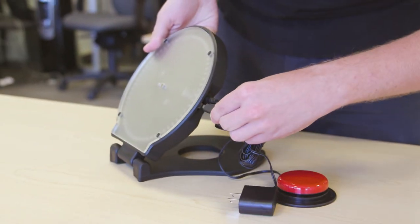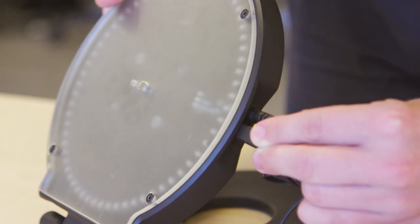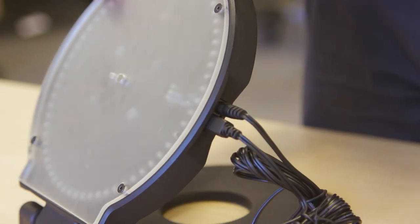Charging the spinner is easy. Simply connect the supplied USB charger to the side of the device and plug it into a standard power outlet.